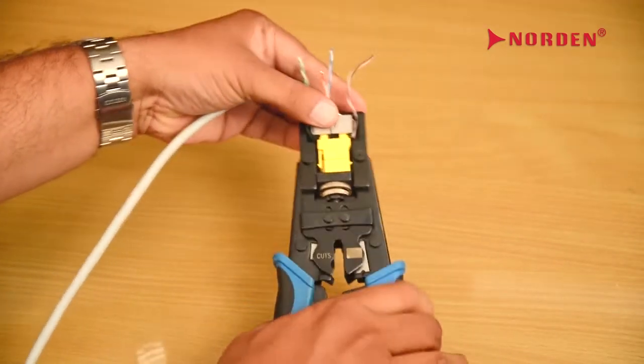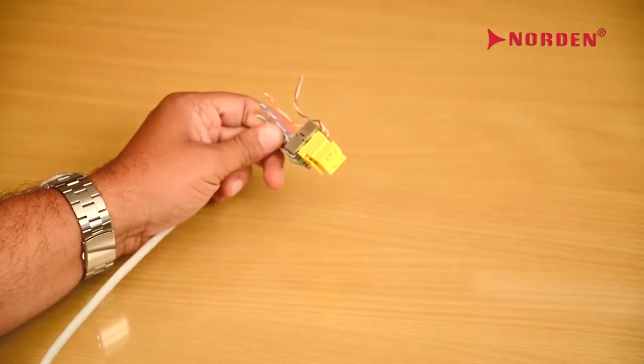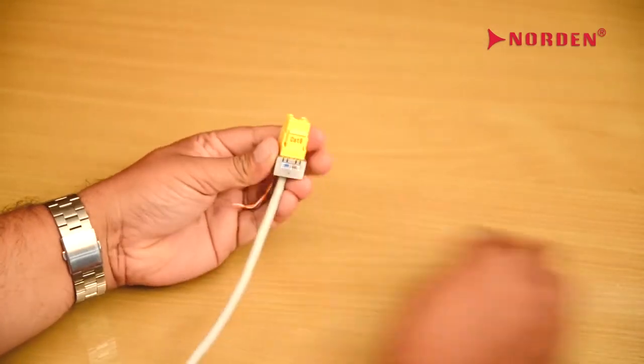Then fully press the handle of the termination tool to terminate the keystone. We can remove the wires which are not completely cut off during the process with ease.